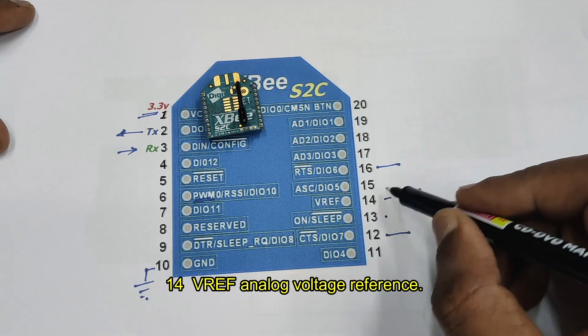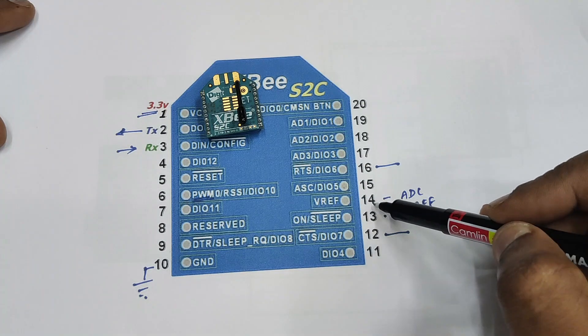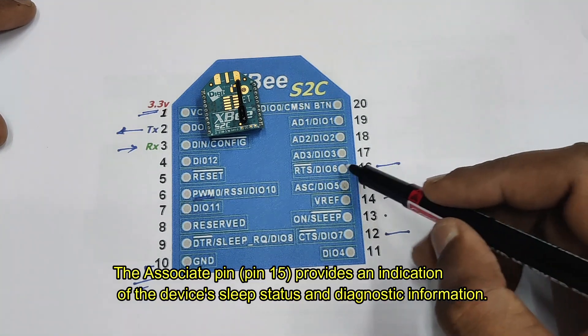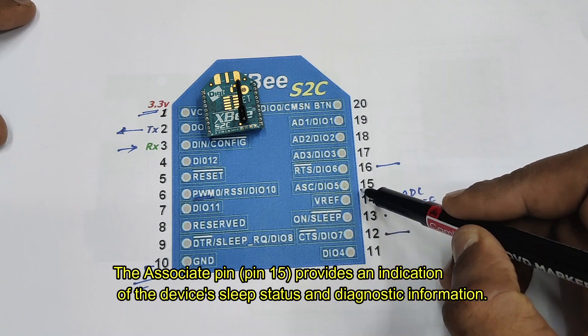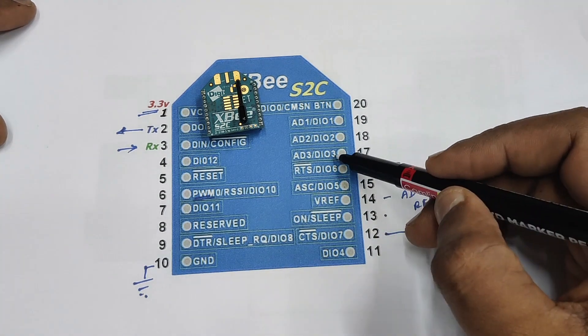Pin 14 is ADC, that is V reference which is usually 3.3 volt. And pin 15 acts as associate pin for device sleep indication or status.